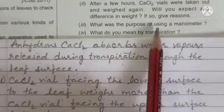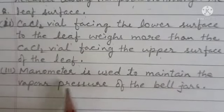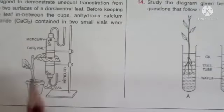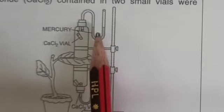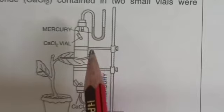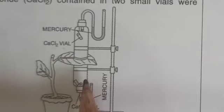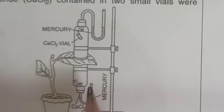What is the purpose of using the manometer? The manometer is used to maintain the vapor pressure of the bell jar. If the mercury level changes, it indicates that the apparatus is not airtight, or that the water vapor released from the leaf surface is not completely absorbed by the calcium chloride. So the mercury manometer is used to maintain the vapor pressure of the bell jar.